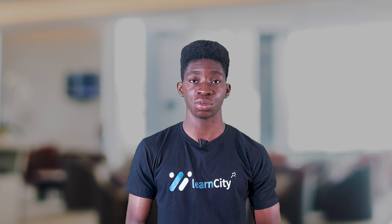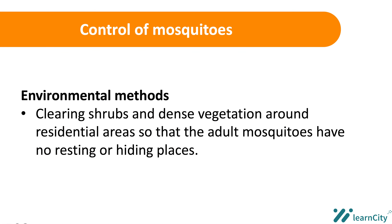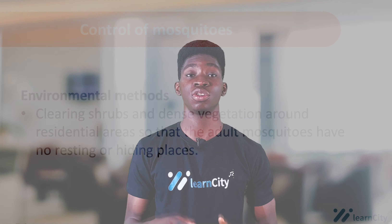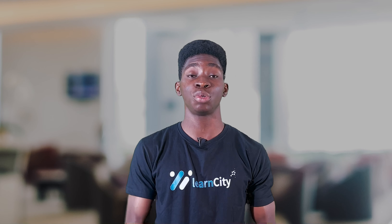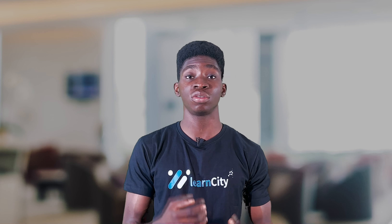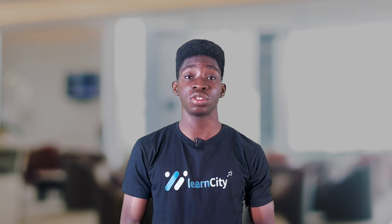Another environmental method is clearing shrubs and dense vegetation around residential areas so that adult mosquitoes have no resting or hiding places. When we clear those bushes and dense vegetation, mosquitoes will not have places to hide or rest. Those are the environmental methods of controlling mosquitoes.